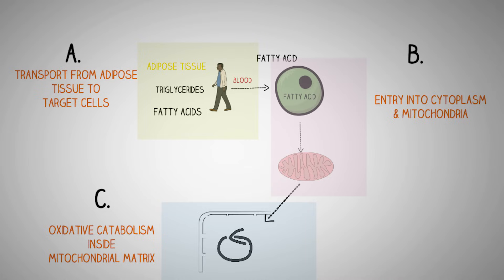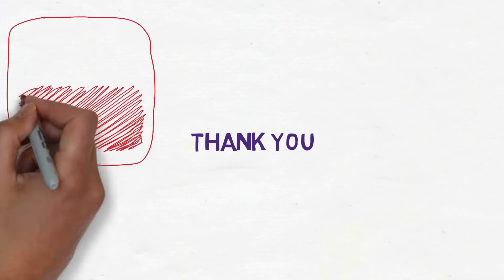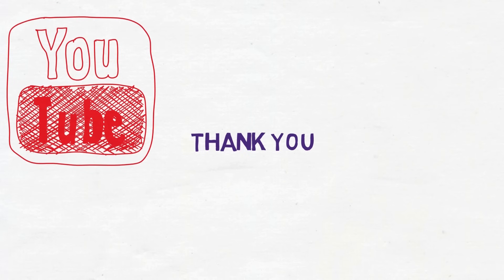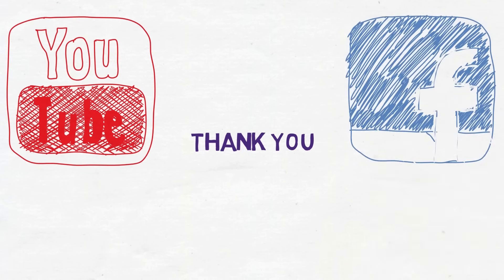Up until now we have studied the transport of free fatty acids from adipose tissue to the target cells, as well as the entry of free fatty acids into the cytoplasm and the mitochondria. In the next part of the video we will discuss in detail the oxidative catabolism that happens inside the mitochondrial matrix. Make sure to watch that video. If you found this video helpful, please subscribe and like. Thank you so much for watching.